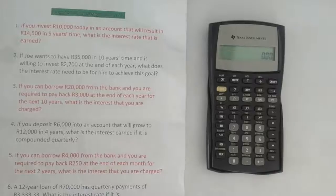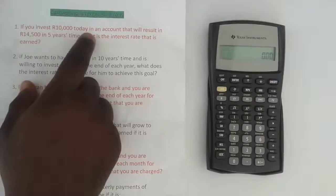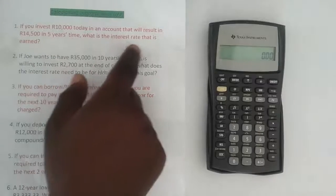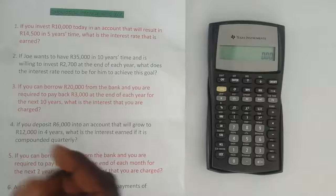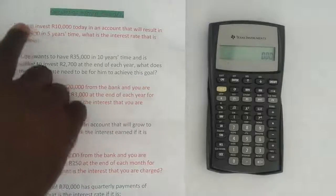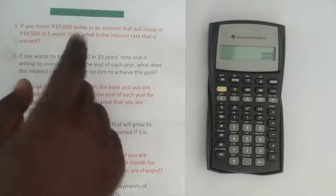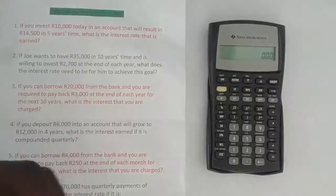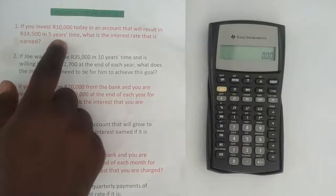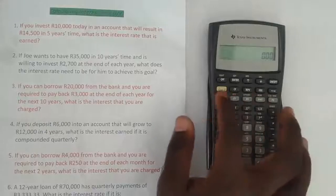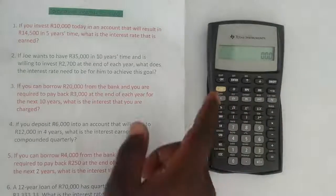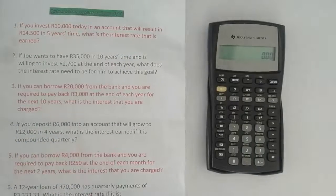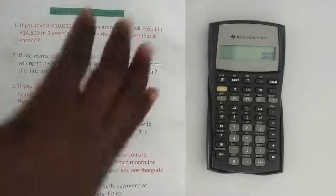Let's look at the first example. We are told that if you invest 10,000 rand today in an account that will result in 14,500 rand in five years time, what is the interest rate that is earned? We have the 10,000 rand which is the present value, 14,500 rand which is the future value, and the period is five years. We're going to use the time value of money elements, putting in what we have and computing the interest rate.